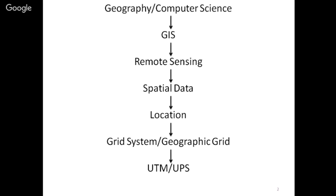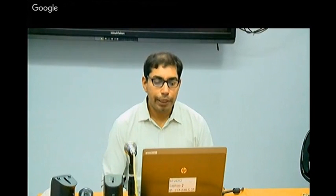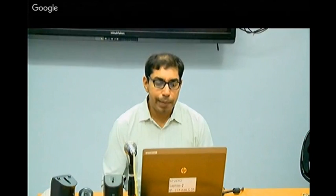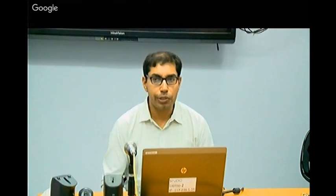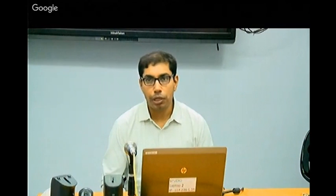We have one more grid system which is not a geographic grid per se — although in a way it also is. The term 'geographic grid' is dedicatedly used for the system using latitudes and longitudes. We have a grid system based on latitudes and longitudes but using a concept somewhat different from the conventional one. That system is called the system of UTM and UPS.